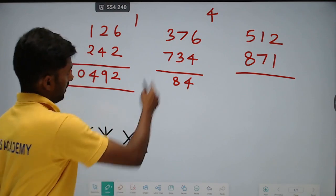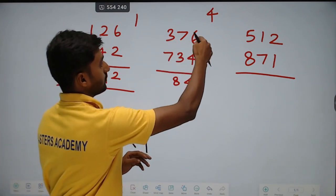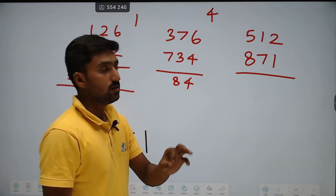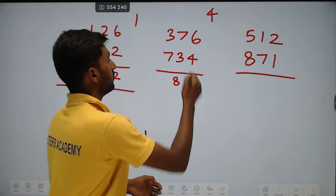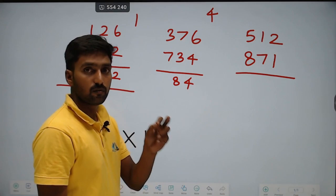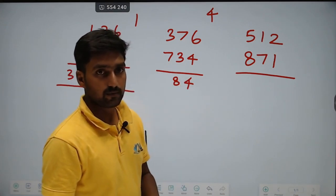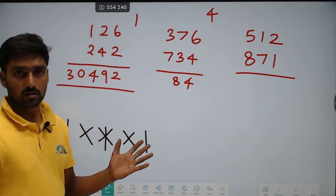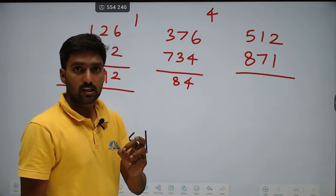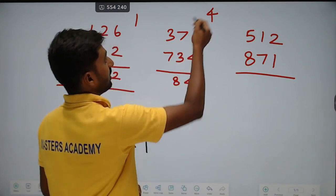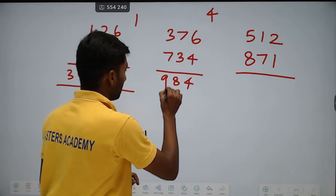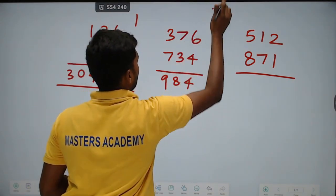Next star: 3 into 4 is 12, plus 7 into 6 is 42, so 12 plus 42 is 54, plus 7 into 3 is 21. So 54 plus 21 is equal to 75. Already carry 4, so 75 plus 4 is 79. Write 9, carry 7.